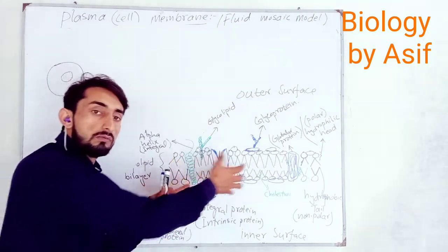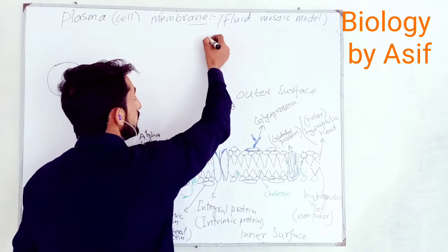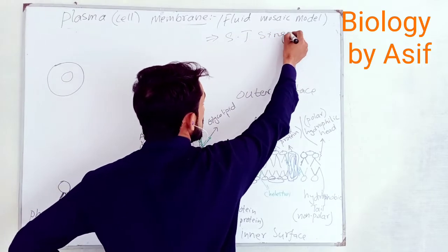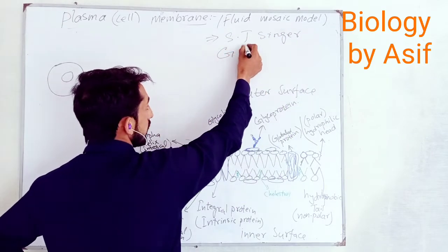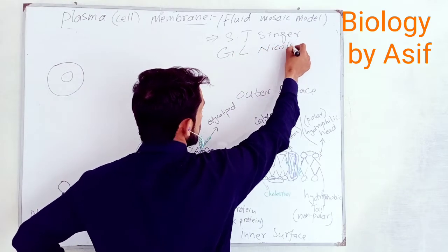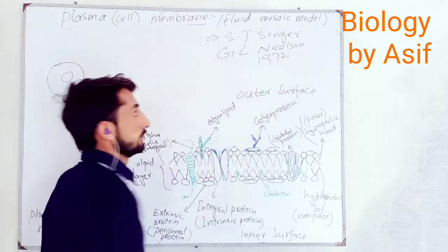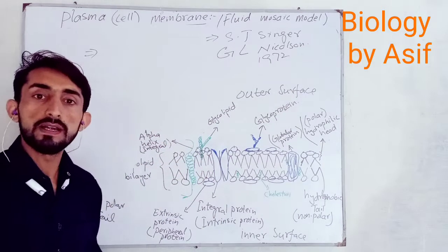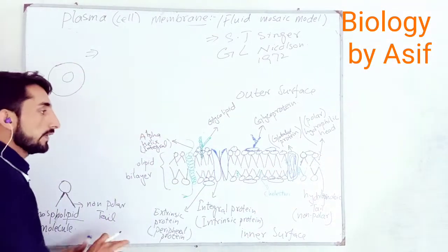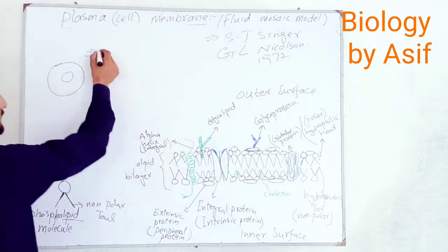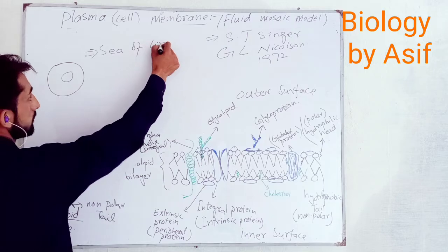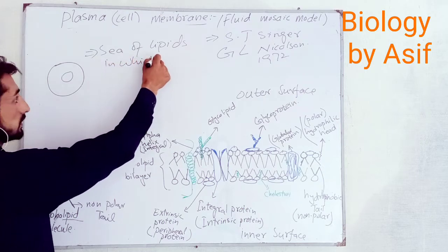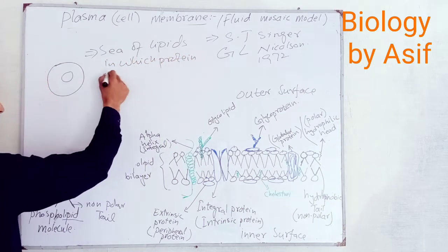This fluid-mosaic model was proposed by two scientists: J. Singer and G.L. Nicolson in 1972. According to them, this cell membrane is a sea of phospholipids in which proteins are floating.